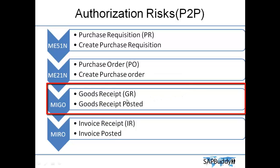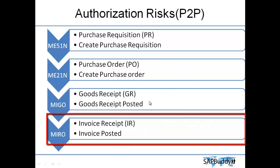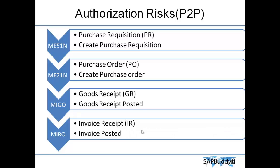The goods go to the warehouse or stores, where goods receipt is performed to confirm receipt. Then invoice verification takes place along with the goods — during invoice verification you can also adjust the purchase order value if there are differences, and invoices can be reconciled. After the invoice is verified, it goes to FI for payment processing.